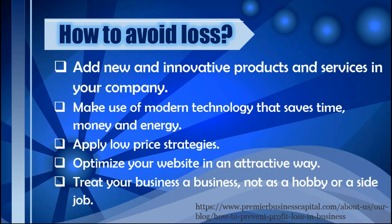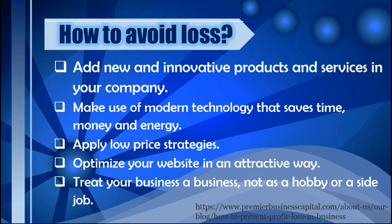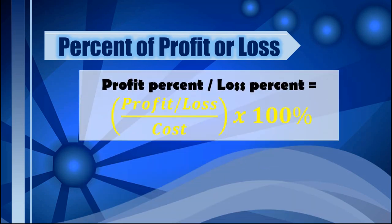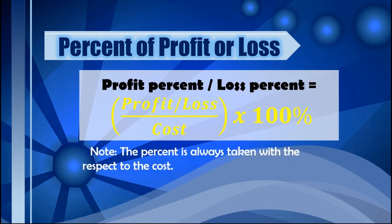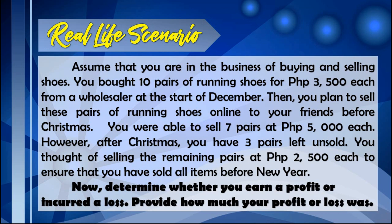These are some suggested ways to avoid losses. Aside from finding the profit or loss, we could also determine the percent of profit or loss. The percent is always taken with respect to the cost. To find this: profit or loss divided by cost, times 100%.